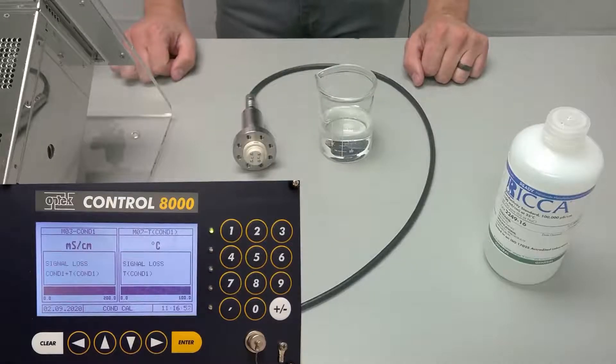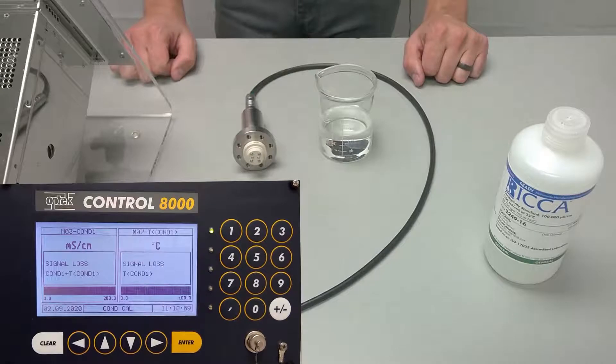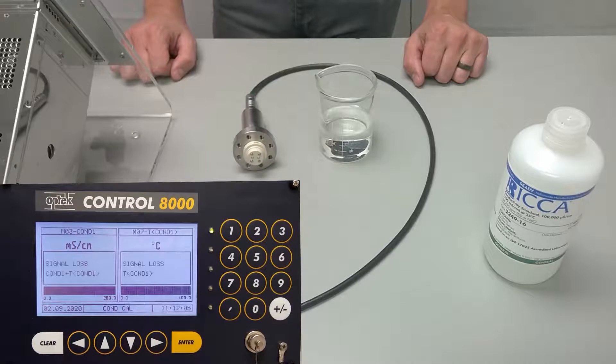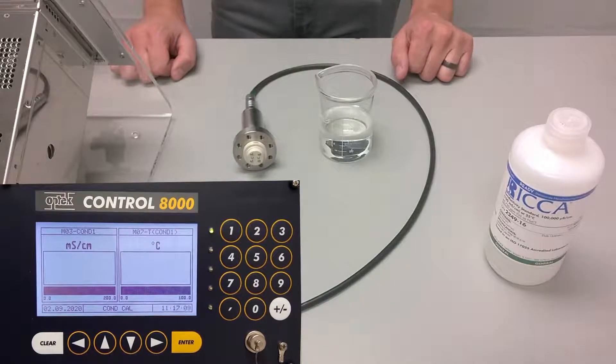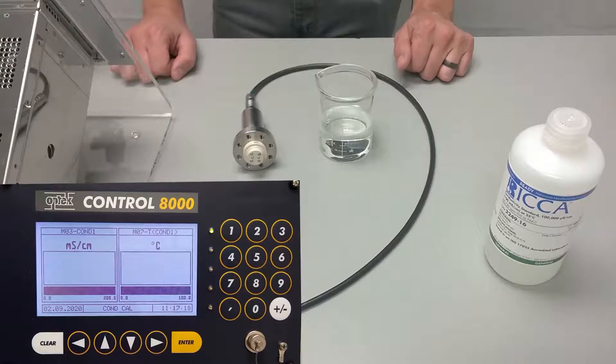In this video, we are going to perform a single point conductivity calibration using an OPTEC C8000 transmitter and an ACF60 conductivity sensor. In addition to the hardware, we will need a conductivity solution. We use a RIC 100 millisiemens standard.